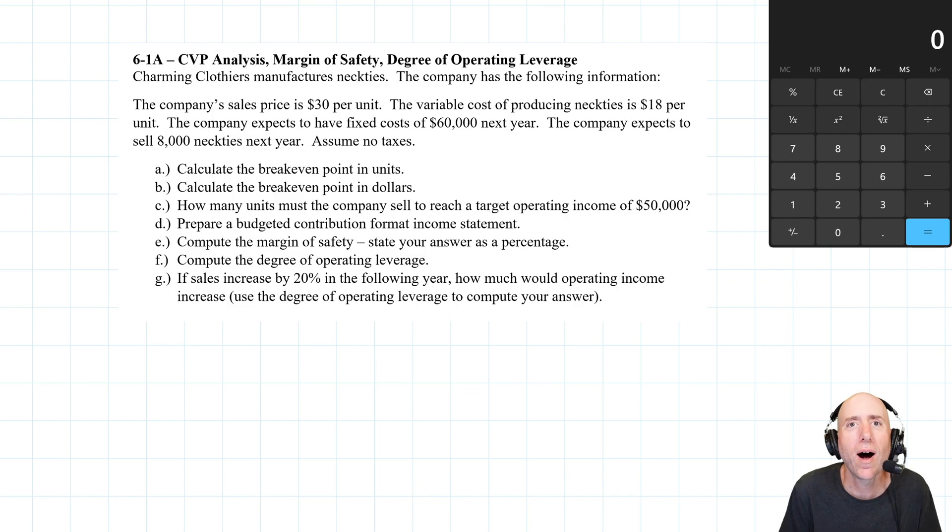Let's take a look at problem 6.1a. Charming Clothiers manufactures neckties. The company has the following information: Company sales price is $30 a unit, the variable cost of producing the neckties is $18 a unit, company expects to have fixed costs of $60,000 next year, and the company expects to sell 8,000 neckties next year. Assume no taxes. Before I jump into any of the ABCD stuff that's required here, when I get a CVP problem, I always want to lay it out my own way.